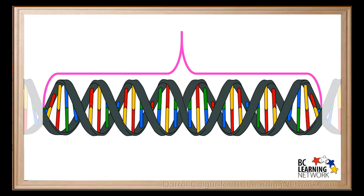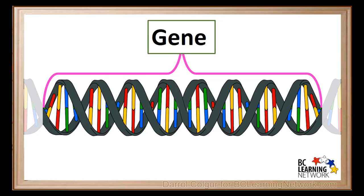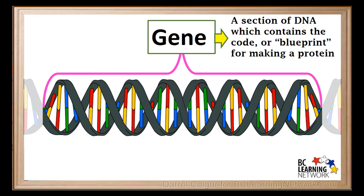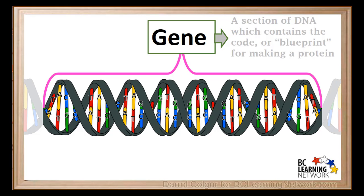Here we are looking at a section of the DNA strand. The section of DNA we've shown here represents what we call a gene. A gene is a section of DNA which contains the code or blueprint for making a protein. The code is carried by the order of the colored section shown in the center of the spiral. These are called bases and they're represented by four letters: A, T, C, and G.